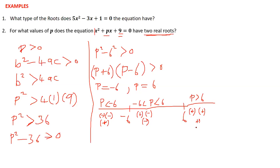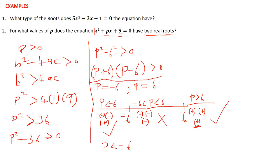We take the parts that satisfy the expression being greater than zero. The positive results satisfy the condition, so the range of values of p are p less than negative 6 and p greater than 6. These are the ranges of values of p needed for the equation to have two real roots.